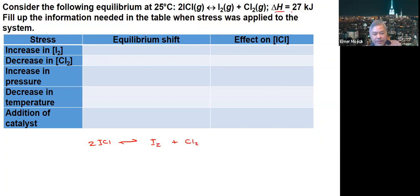You're given a delta H that is positive, which means it is an endothermic reaction. Let's look at each stress and predict the equilibrium shift and the effect on ICl.